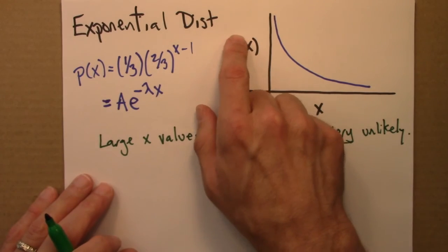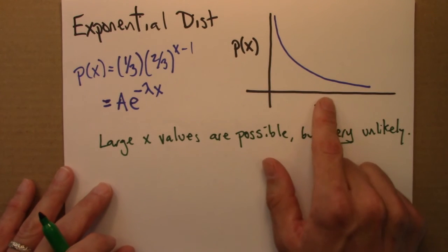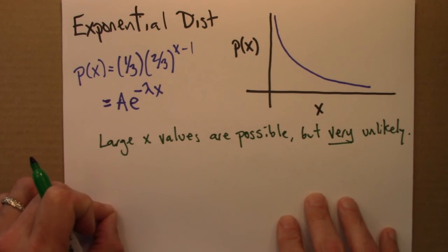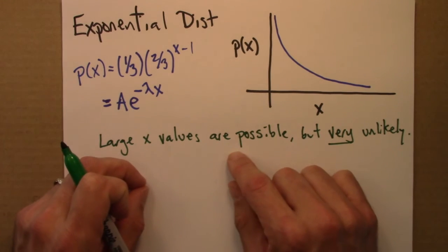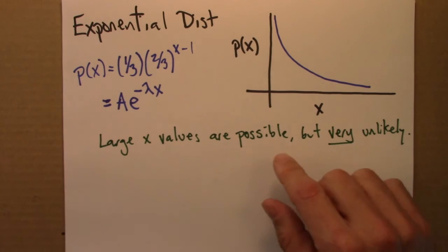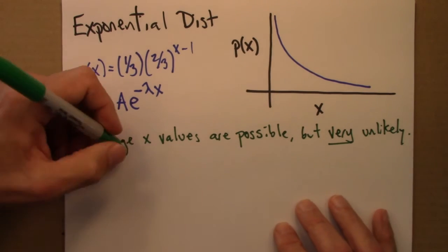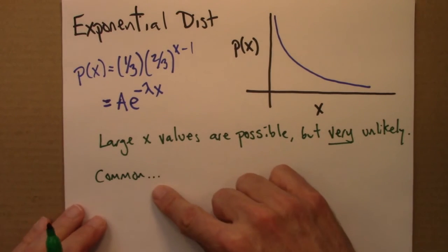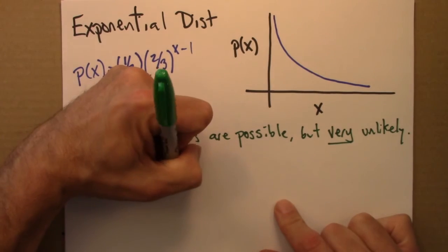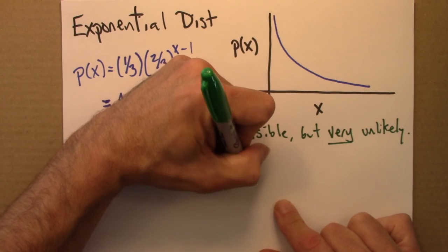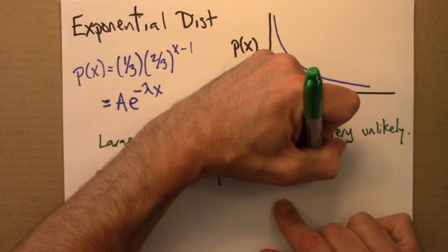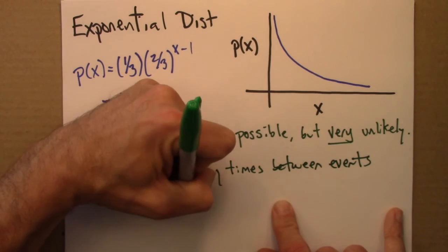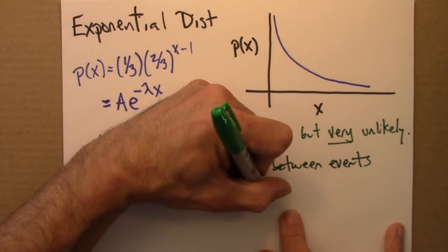And exponential distributions or things like them are very common. They occur generally if there's some waiting time for something between events which occur with a continuous probability. So in this case, it's a waiting time. How long do I have to wait before I'm successful at throwing the paper in the can? And there's a constant probability of a third. So these occur often, they're common. They occur with waiting times between events that occur with constant probability.